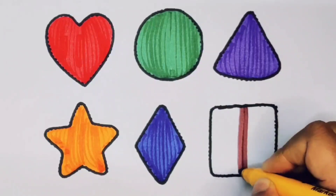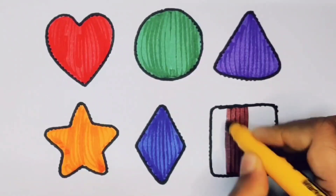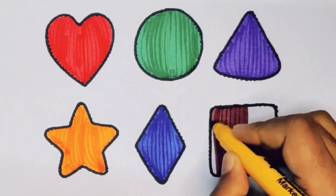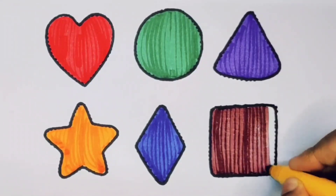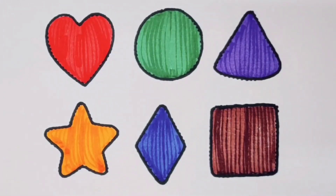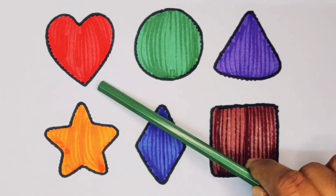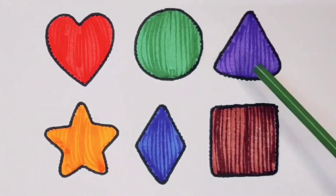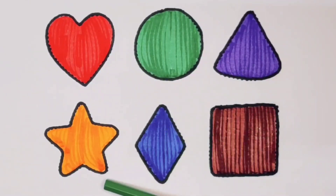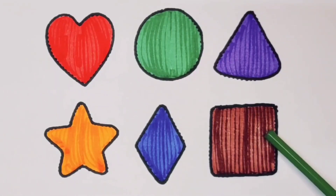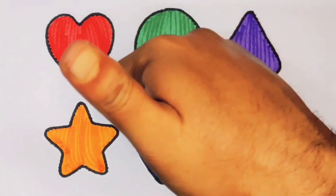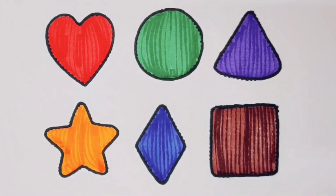Chocolate color square. What we learned: red color heart, green color circle, purple color triangle, orange color star, blue color rhombus, chocolate color square, and white color.